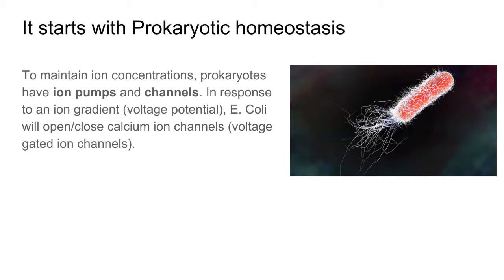Prokaryotes, the most ancestral life on earth next to archaea, also had this problem. And so to combat it, they had ion channels and ion pumps in order to control the movement and concentration of ions within the cell. What an ion concentration fundamentally is from an electrical perspective is just a voltage — a potential difference. By pumping ions into and out of the cell, we are establishing ion gradients and voltage potentials.